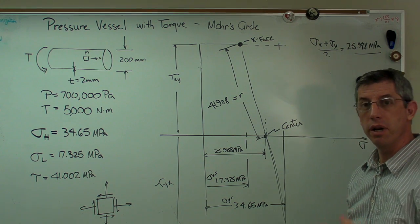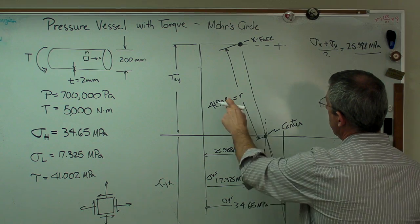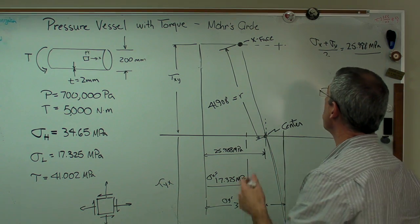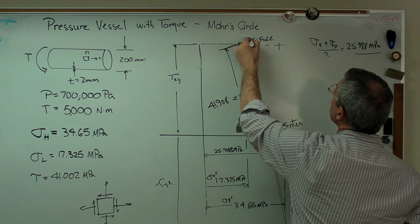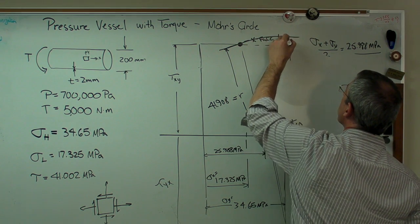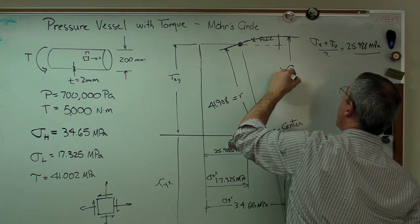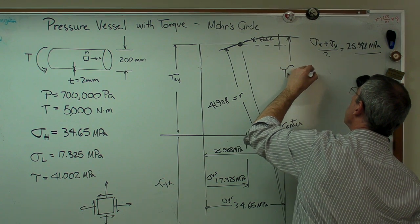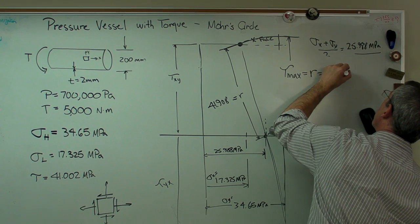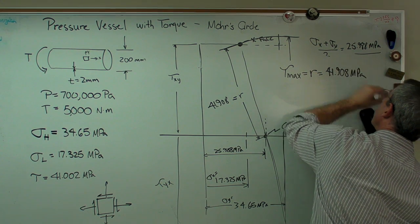I'm kind of running short on room here, but here's what I've got. I've got the radius of the circle and the center of the circle. So now it's just geometry. If I rotate this up to there, that number right there is tau max. And that equals the radius, and that equals 41.908 megapascals.